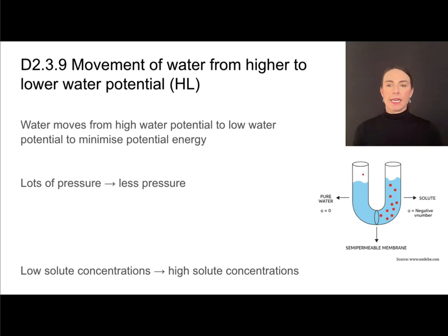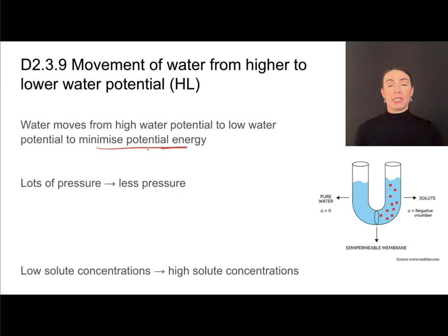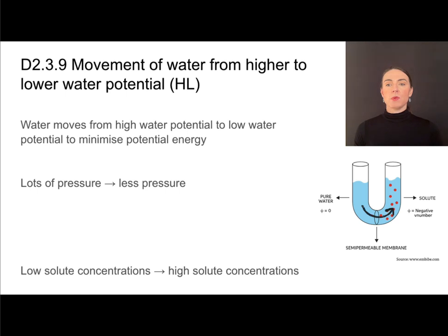In this diagram, there are different conditions on either side of a semi-permeable membrane. It's important to note that water will always move from a high water potential to a low water potential in order to minimize potential energy. From standard level content, we know that in osmosis water moves from areas of low solute concentration to areas of high solute concentration — let's put that in the context of water potential.